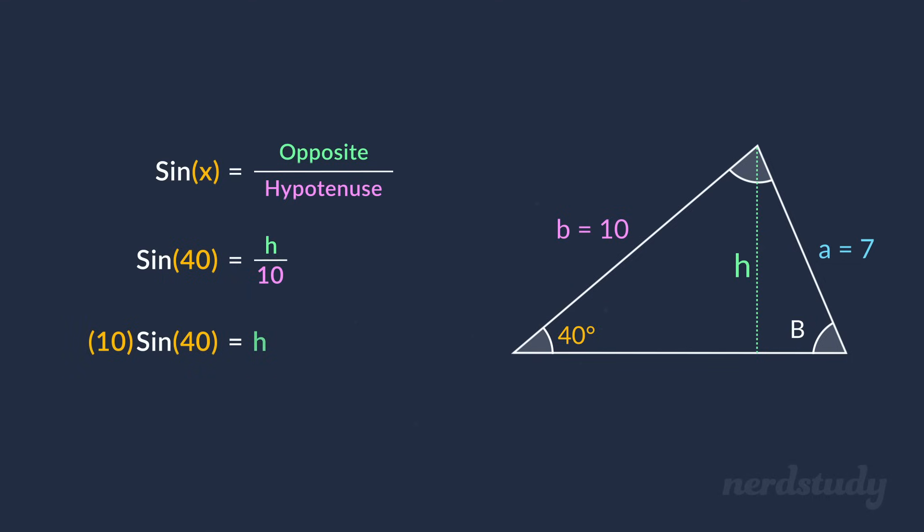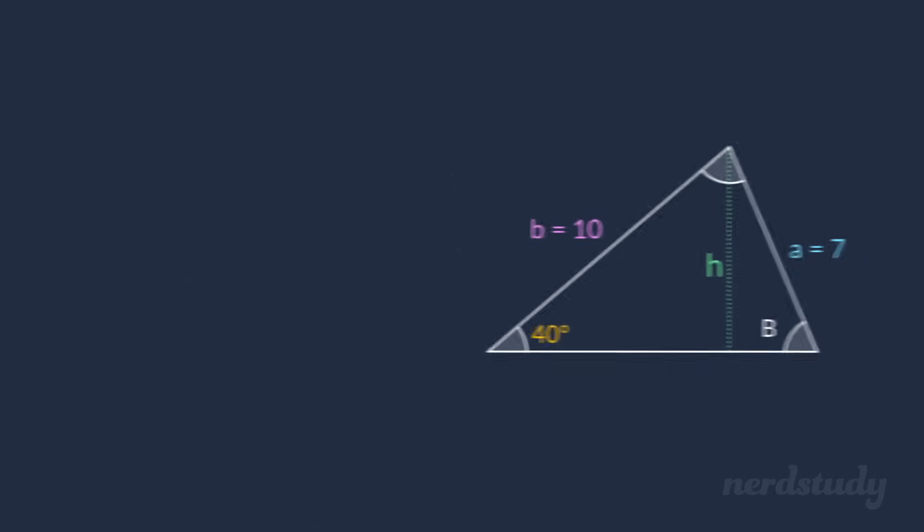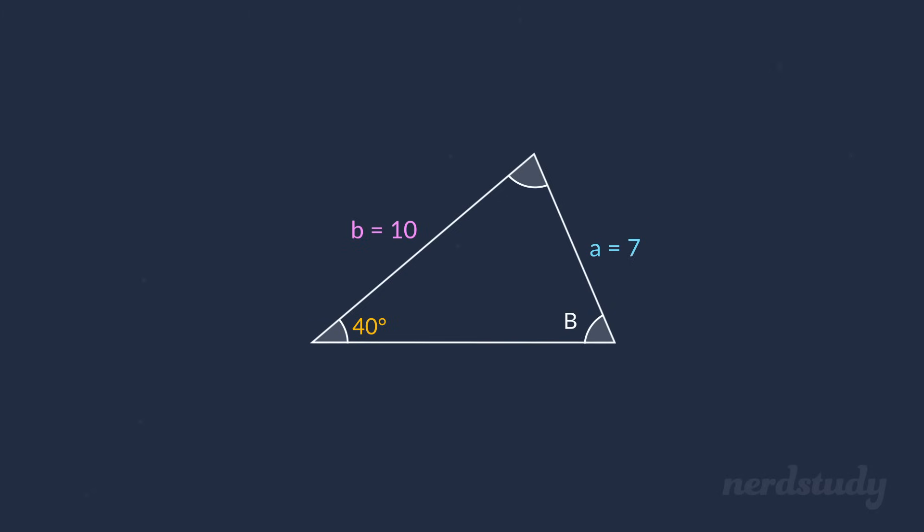After simplifying and computing for h, we get the height as roughly 6.43, which is less than 7. So, would we be able to expect an ambiguous case here? Well, the answer is yes, because we can see that we have the length of side a being greater than the height, as well as the length of side b being greater than side a, along with our angle being acute, giving us the perfect situation where an ambiguous case can occur. Now that we've confirmed this, let's solve for the two different angles that produce the two triangles.